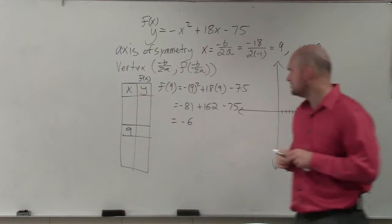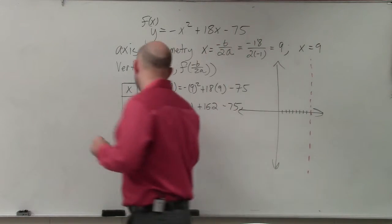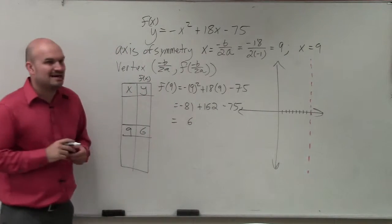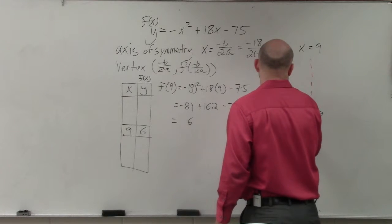And so then minus 75 is going to give me a negative 6. I think I did my math in my head correct? Positive 6. Positive 6, you're right. Thank you. So my vertex is at 9 comma 6. So I go back over here. I go 1, 2, 3, 4, 5, 6.